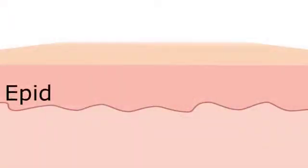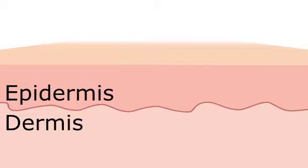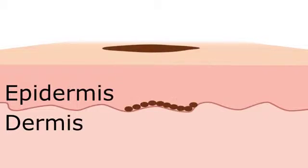How moles look will depend on where the nests of pigment cells are. Our skin is in two layers — the top layer of the epidermis and the bottom layer of the dermis. And if we have lots of pigment cells at the base of the epidermis, the top layer of skin, these moles tend to be flat and very pigmented.